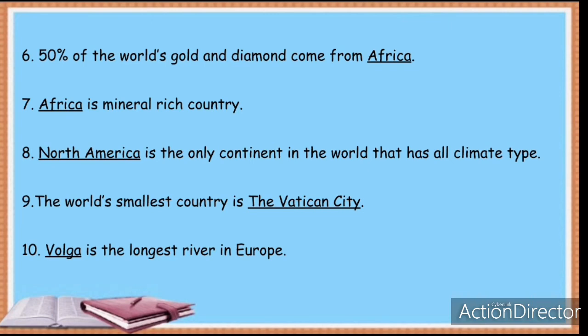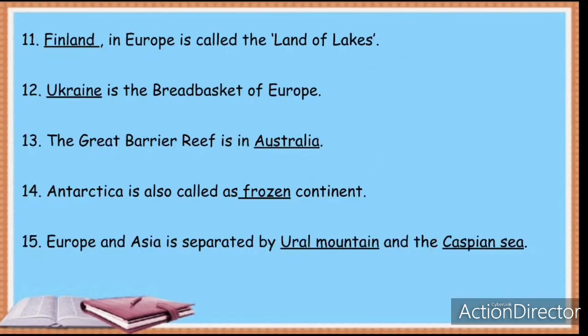The Volga is the longest river in Europe. Finland in Europe is called the land of lakes. Ukraine is the bread basket of Europe. The Great Barrier Reef is in Australia. Antarctica is also called the Frozen Continent. Europe and Asia are separated by the Ural Mountains and the Caspian Sea.